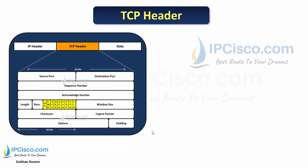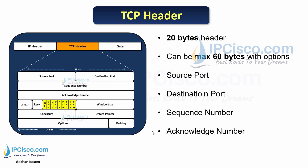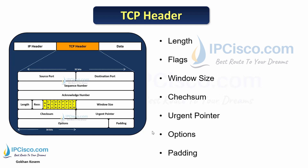The TCP header is 20 bytes long. With option parts, we can increase this to a maximum of 60 bytes. There are many fields in a TCP header: source and destination ports, sequence number, acknowledgement number, length, flags, window size, checksum, urgent pointer, options, and padding.